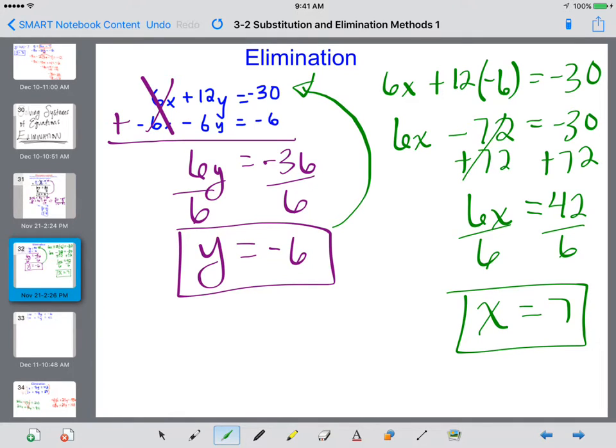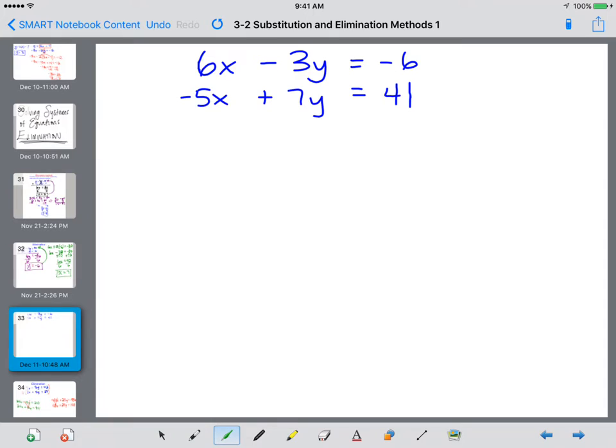So those are two rather easy examples. Here is a more challenging example when the equations just don't eliminate. So we set this up when we want to add it. However, if I do 6 plus a negative 5x, those don't eliminate. If I do negative 3y plus a positive 7y, those don't eliminate.